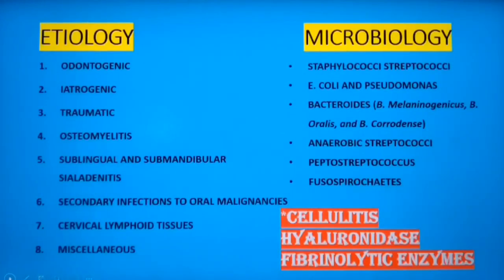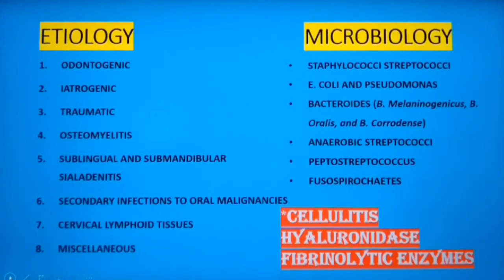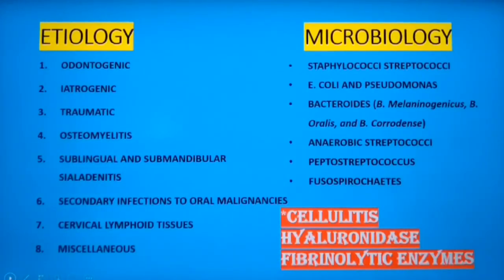Causes of Ludwig's angina include odontogenic infections such as acute dentoalveolar abscess, acute periodontal abscess, or acute pericoronal abscess. Pericoronal abscess in relation to erupting third molars can extend into sublingual, submandibular, and pterygomandibular spaces, resulting in Ludwig's angina. Use of a contaminated needle for local anesthesia is an iatrogenic cause. Traumatic injuries like compound comminuted mandibular fractures or deep penetrating wounds can also lead to this condition.